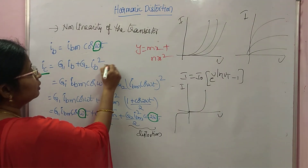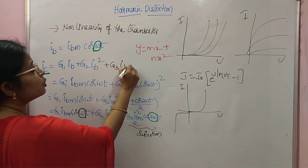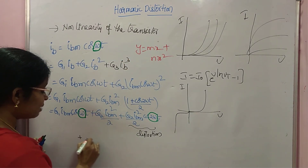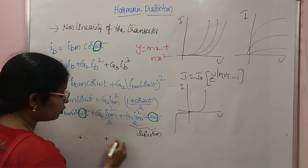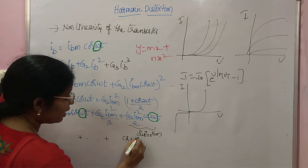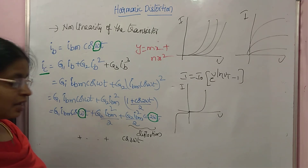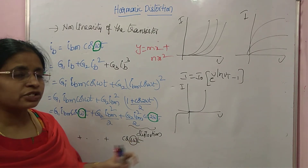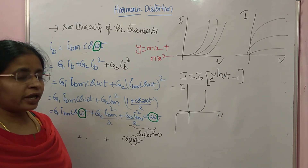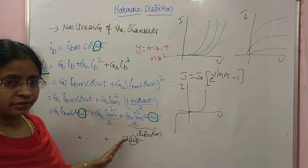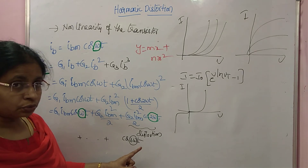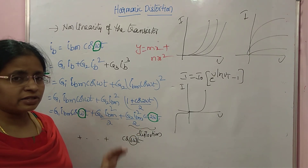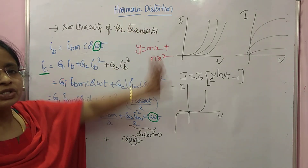Similarly, if we add a G3·IB³ term, substituting and expanding gives a cos(3ωt) term. This 3ω term also contributes to distortion. So the distortion due to these higher frequency components — 2ω, 3ω, and so on — is called harmonic distortion.